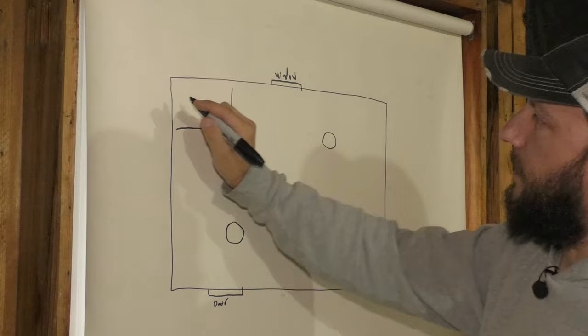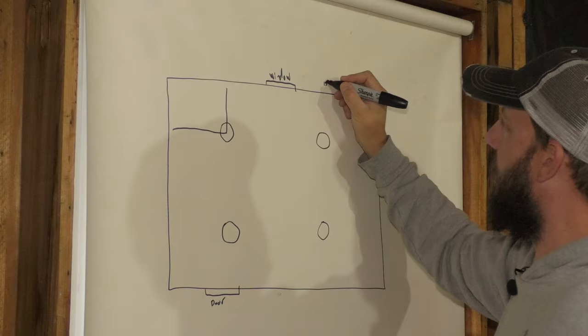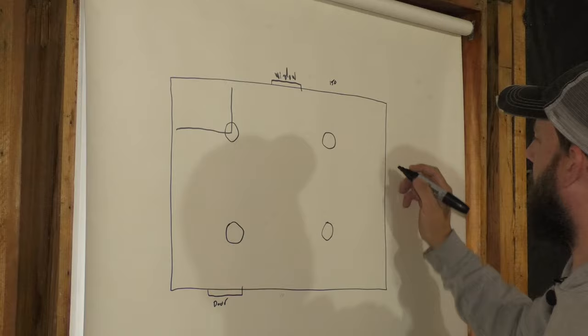So this is the formula I use. You take the distance of each wall. So the distance of this wall is 150, 150 inches. And then this wall right here on both sides is 113.